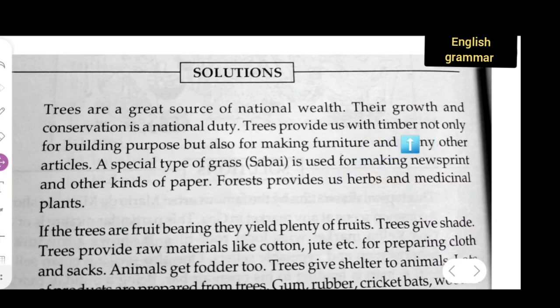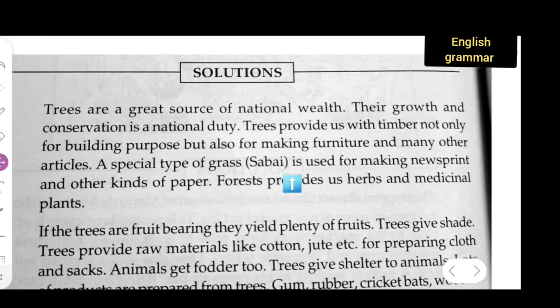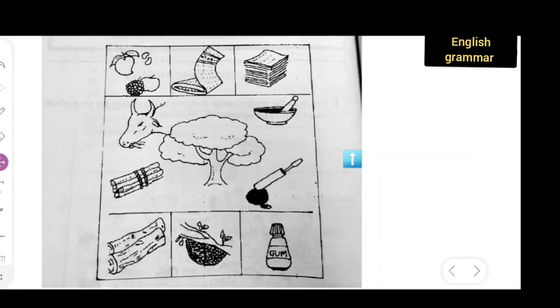For building purpose but also for making furniture and many other articles. A special type of grass, Sabai, is used for making newsprint and other kind of papers. These are the papers which we can make of this type of special grass. Forest provide us with herbs and medicinal plants. It also provides us with herbs and medicinal things.